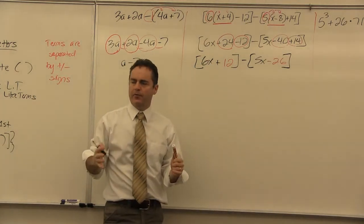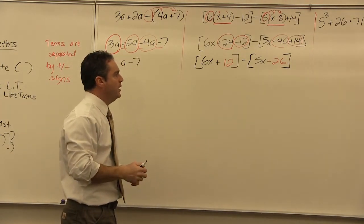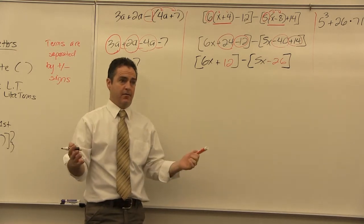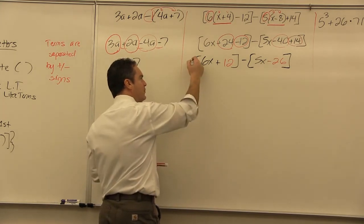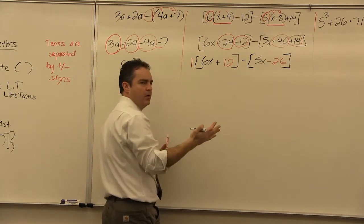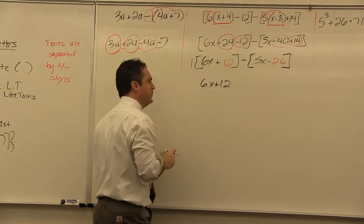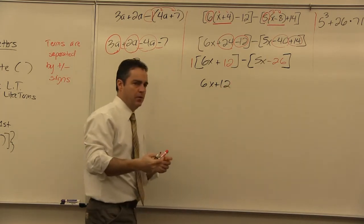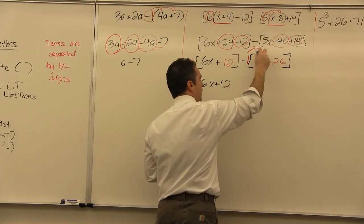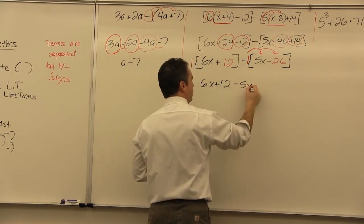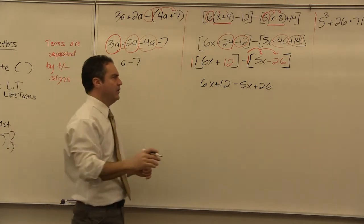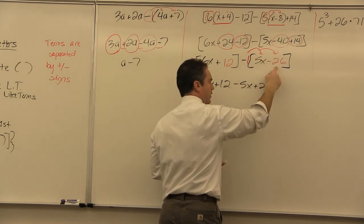Now what's the distributor for the outer square bracket? Nothing is written, so there's a hidden 1. One times anything is itself, so the first bracket simply becomes 6x + 12. The second bracket has a negative in front, so the distributor is negative 1 — it must go to both terms: negative 5x, and negative times negative 26 makes positive 26. The number one mistake students make is forgetting to distribute the negative to the second term.